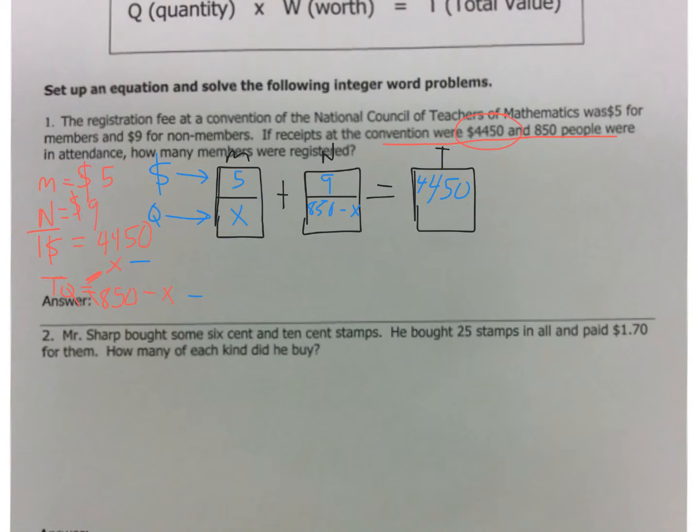So, now, we're going to multiply down. Once your boxes are filled, we multiply down. So, 5 times X is 5X plus. Now, this is an algebraic expression in here. So, what I always say is set up for the distribution. Less mistakes that way if you do. So, now, we're going to do the math out for this. So, let's put this all together. 5X plus 9 times 850 is 7,650 minus 9X, because you distribute to both pieces, equals 4,450.